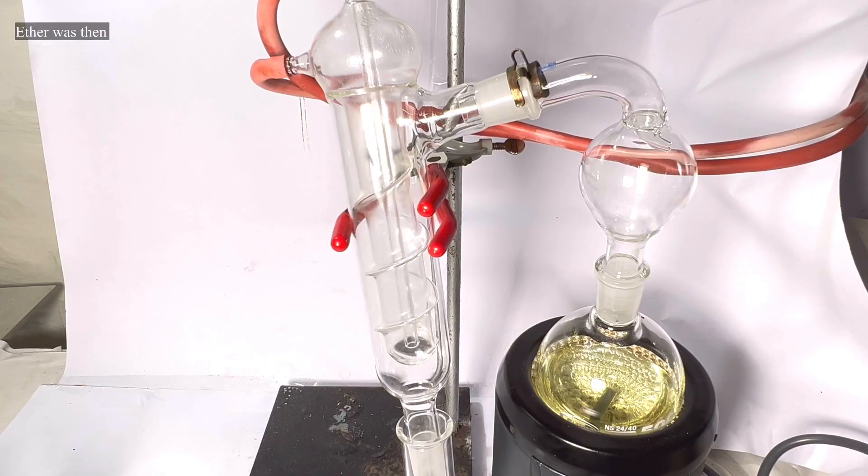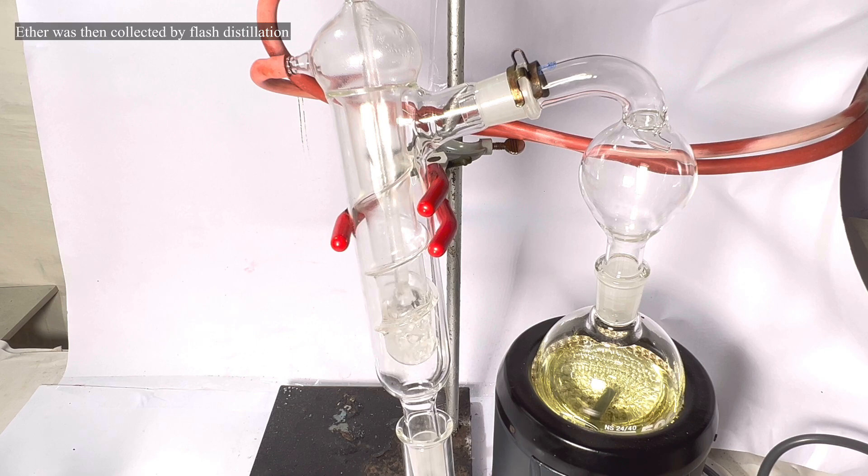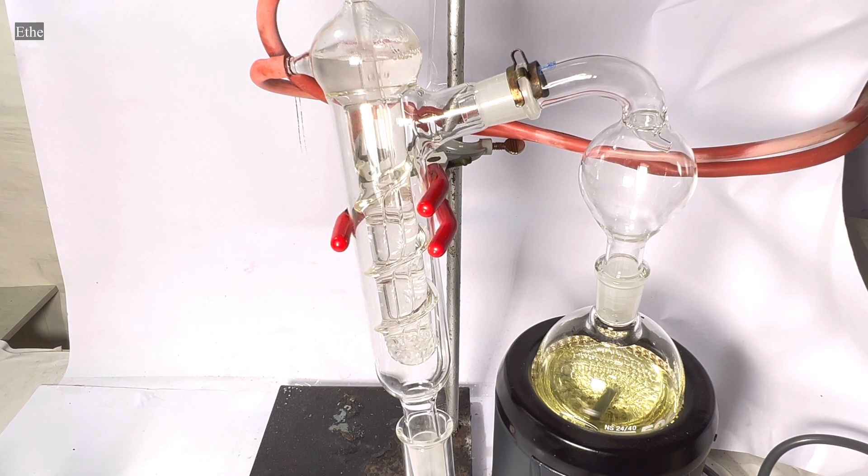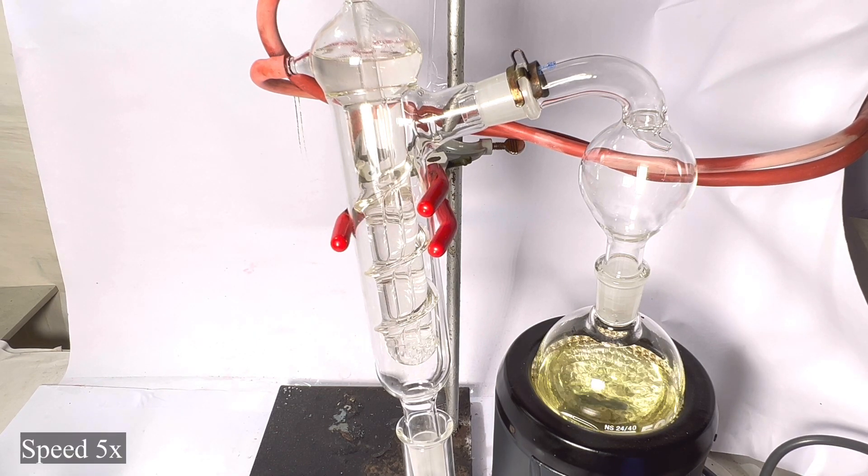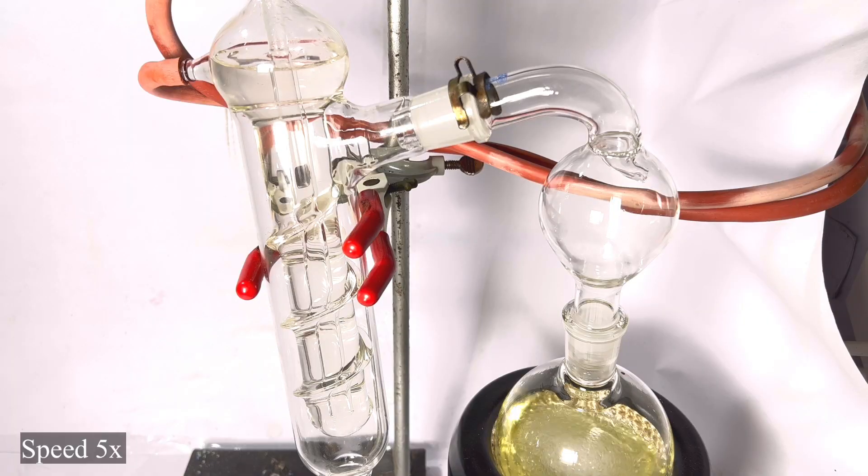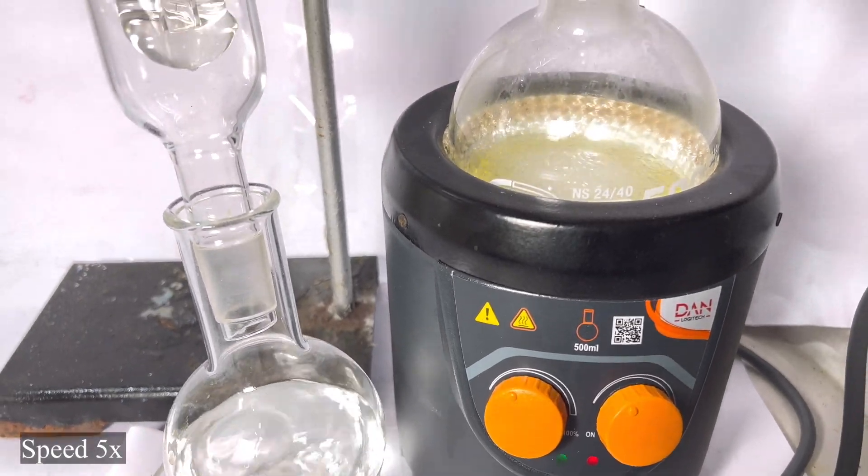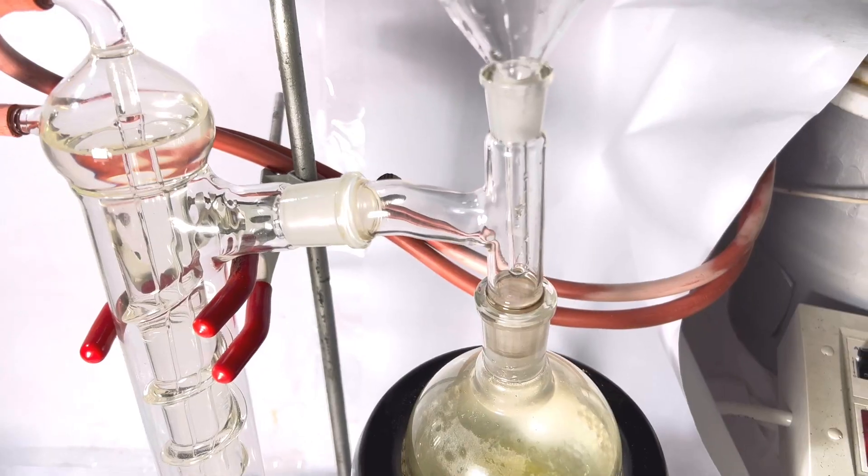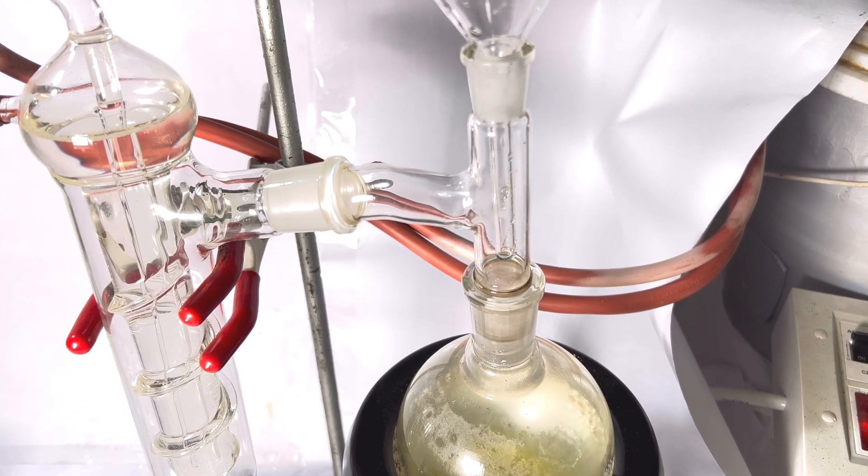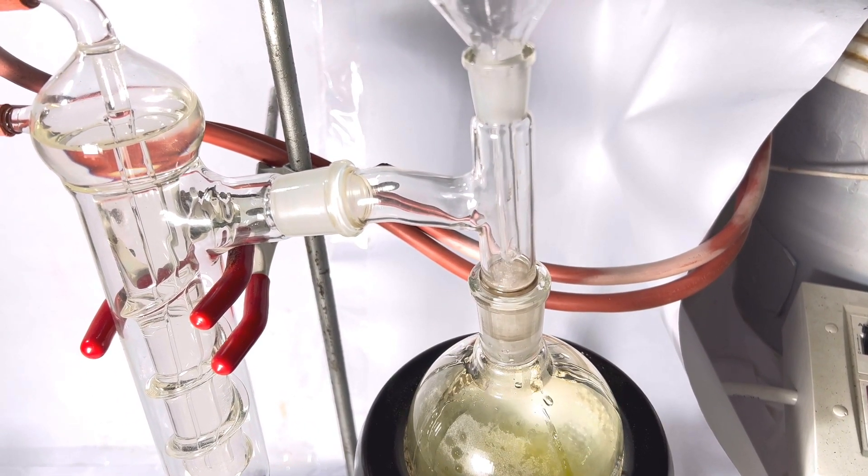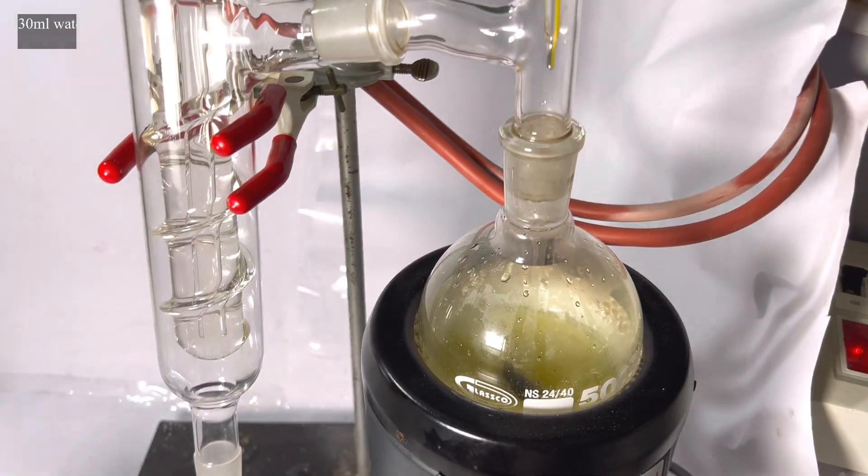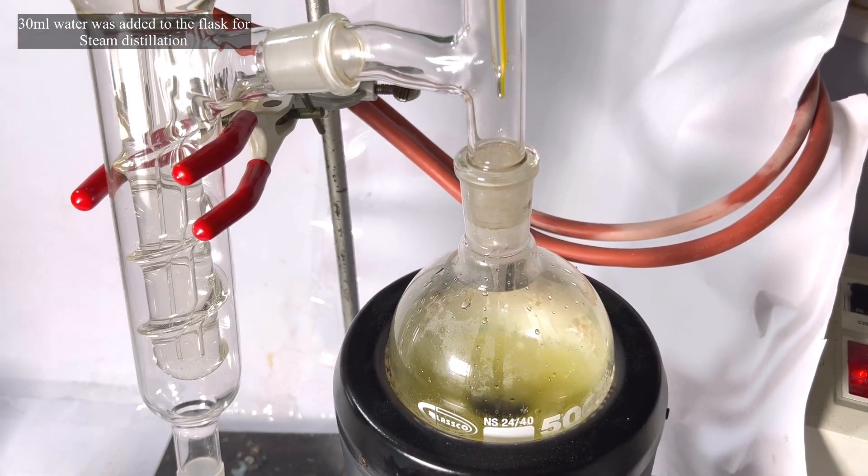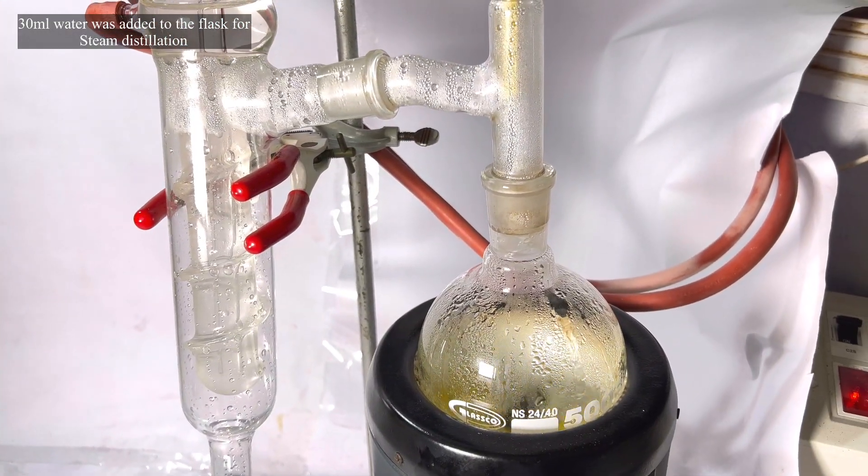A simple distillation was quickly set up to remove the maximum ether from the flask. This ether was later stored in a separate container labelled solvent ether which could be used in various other organic synthesis as a solvent. Once all the ether gets distilled over, around 30 ml of distilled water was added to the reaction flask and a steam distillation was carried out. This helps to remove any unchanged reactants or diphenyl if it was formed.